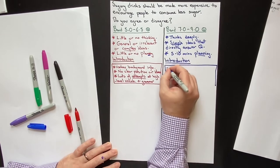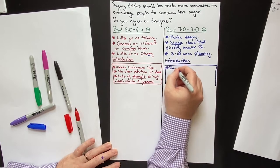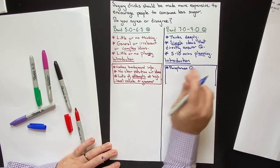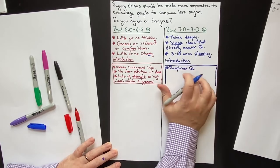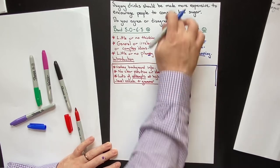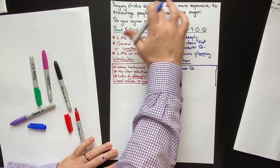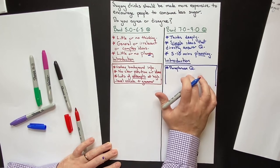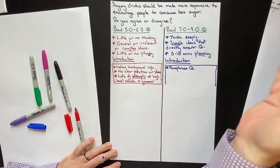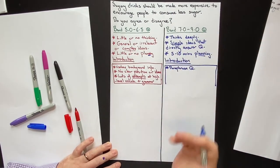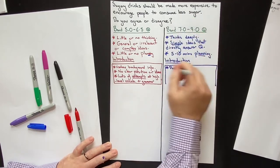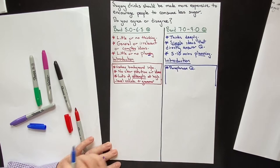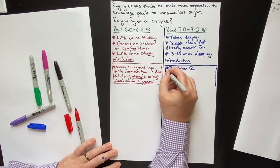What a Band 7, 8, or 9 student does is first, they accurately paraphrase the question. Paraphrasing the question demonstrates to the examiner that you fully understood it — if you don't understand the question, you cannot paraphrase it. It also demonstrates that you have Band 7, 8, or 9 level vocabulary and grammar, because you cannot paraphrase accurately and appropriately without having that level of language.